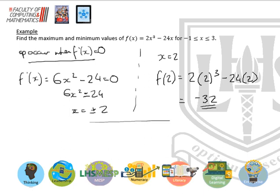So the three coordinates we're comparing are minus 1, 22; 3, minus 18; and then the stationary point of 2, minus 32.